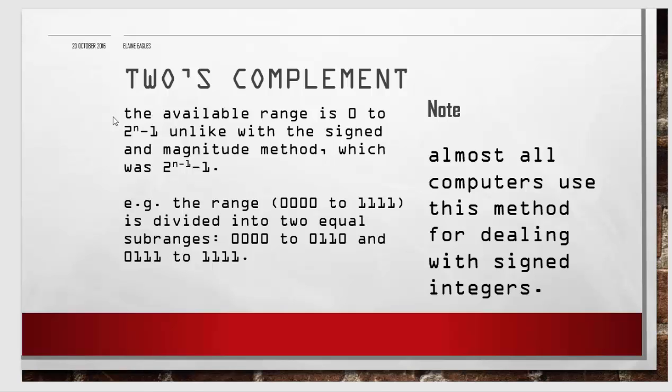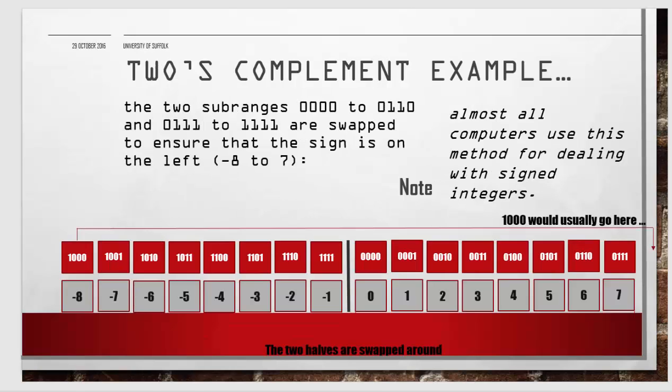Two's complement is where you have the whole range from all zeros to all ones, between 2 to the power of n minus 1, split into two and then swapped around. It looks a bit weird, but you need to understand the whole range, and then halfway through it's swapped around with these numbers representing the minus and these the positive.